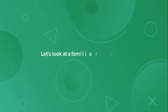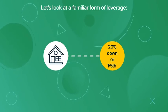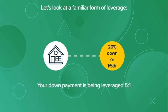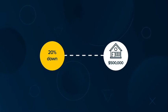Let's look at a familiar form of leverage, a mortgage on a home. When you put only 20% down on a home, or one-fifth, your down payment is being leveraged 5 to 1. If you put 20% down on a home worth $500,000, your cash invested is $100,000.